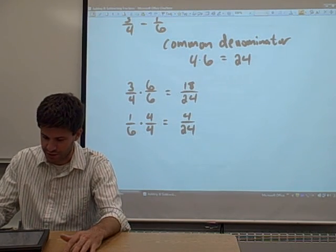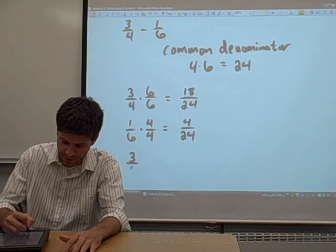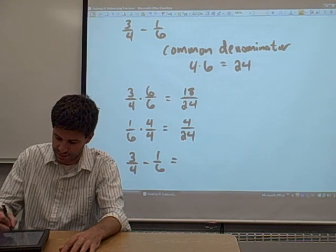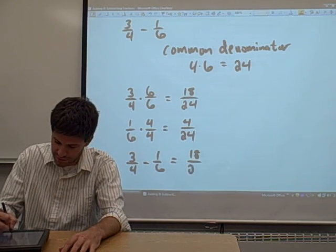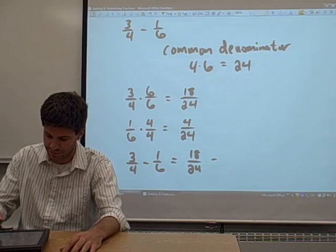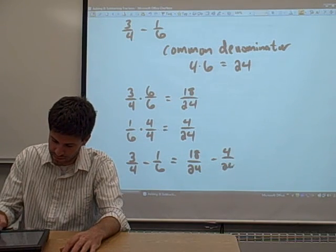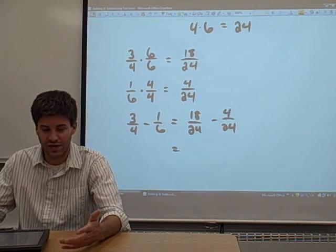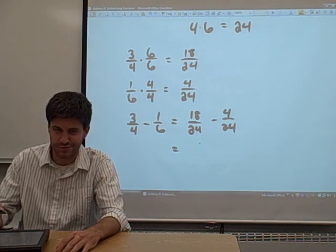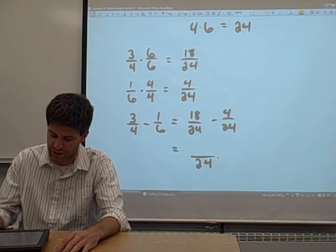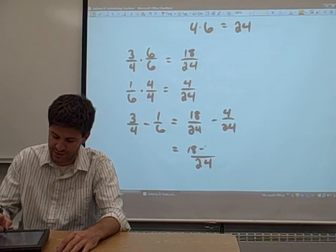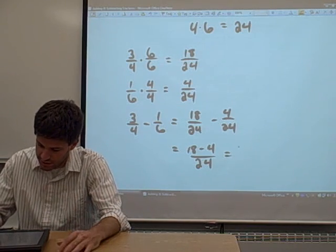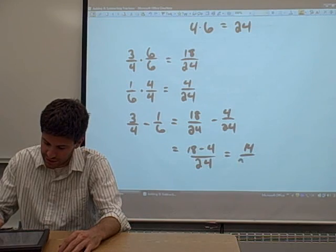And now we can subtract. We can convert this problem, the original problem that we had, 3 fourths minus 1 sixth into a new problem: 18 twenty fourths minus 4 twenty fourths. We can combine the two fractions over one denominator. The numerator is just 18 minus 4. We do the subtraction, and that just gives us 14 over 24.